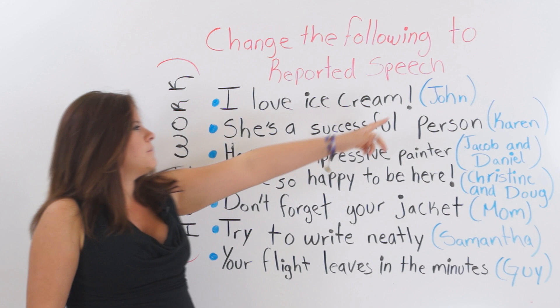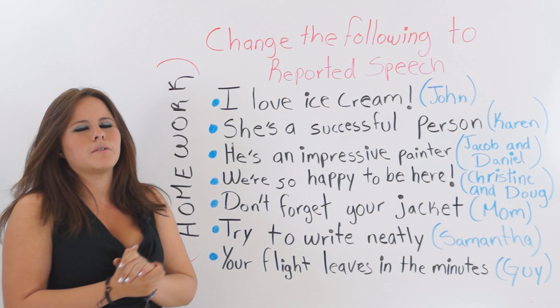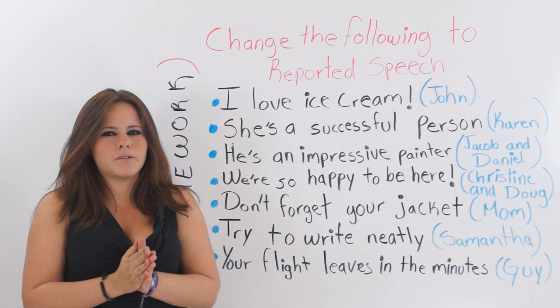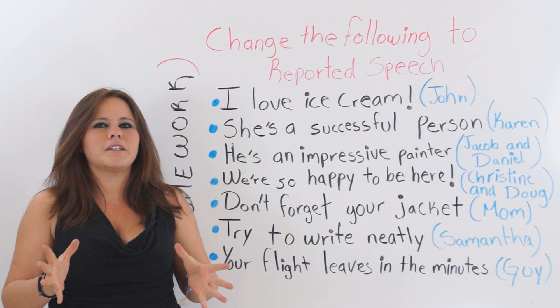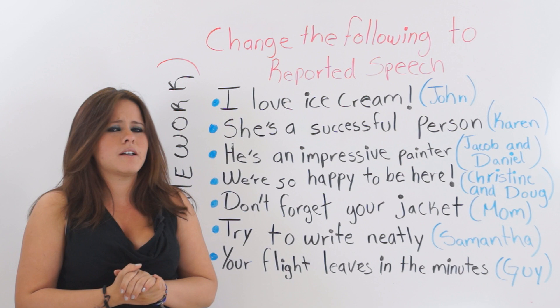The part in blue — which is John, Karen, Jacob, and Daniel — is who's speaking. You're going to put the correct pronoun and then turn it into reported speech. You're going to do your homework in the comments section below this video. Don't forget to do it — it's very important that you do it so you can learn English and practice.